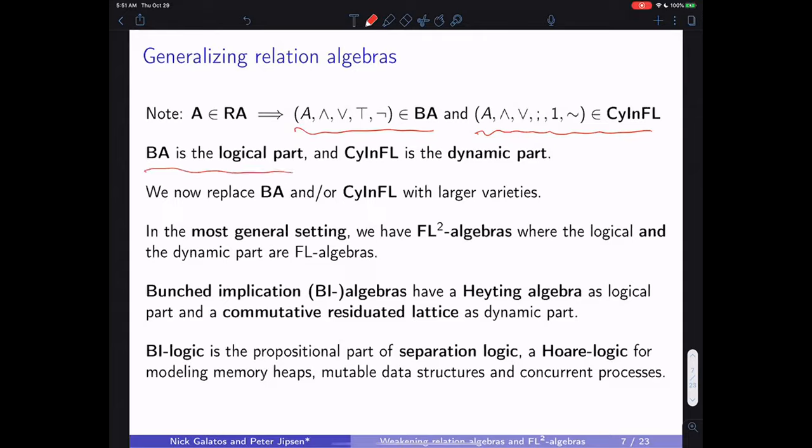Cyclic involutive FL is the dynamic part — it describes how the structure behaves when you compose programs, doing one thing after another. It's the sequential aspect of computing that makes this theory so useful for understanding things in computer science. We can now replace these two parts by larger varieties.